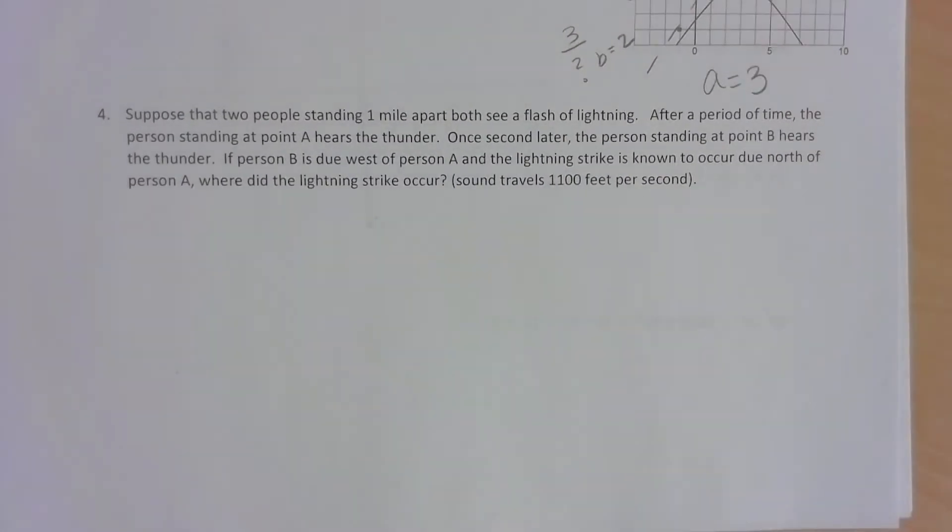All right, last but not least, we have our word problem. So we have suppose that two people are standing one mile apart and they see a flash of lightning. After a period of time, the person standing at point A hears the thunder. One second later, the person at point B hears the thunder. If person A is due west of person B and the lightning strike is known to occur due north of person A, where did the lightning strike occur?